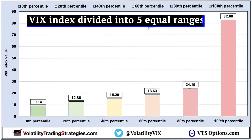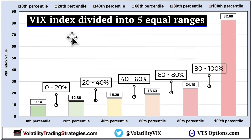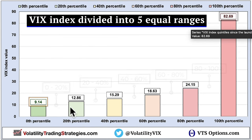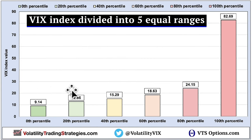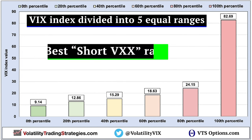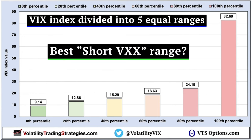What I've done is divide the VIX index up into quintiles — five equal portions. We're talking about 0 to 20, 20 to 40, and so on. The lowest VIX ever was 9.14, and the highest was 82.69. So the range between these two is divided into those five equal quintile bands.